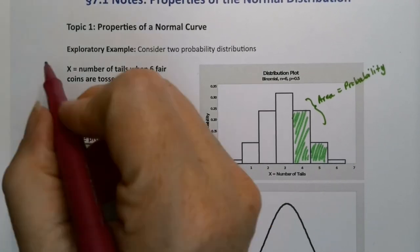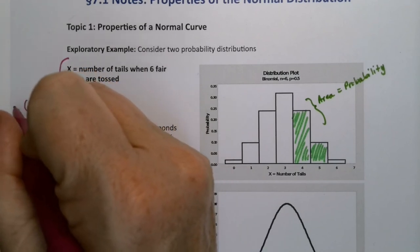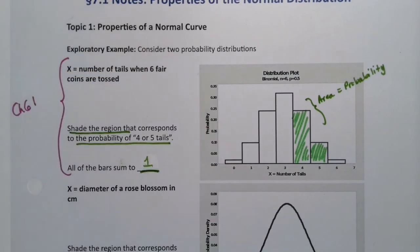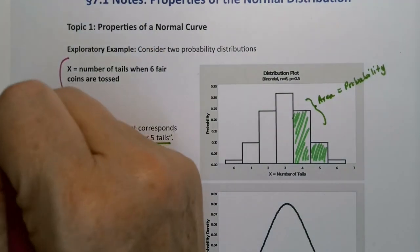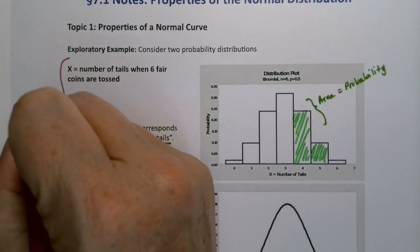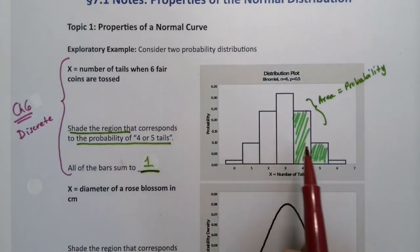Now this is Chapter 6, because it's discrete. You can see it with the histogram. Either you have zero heads, one head, two heads, three heads, and so on. That's it.